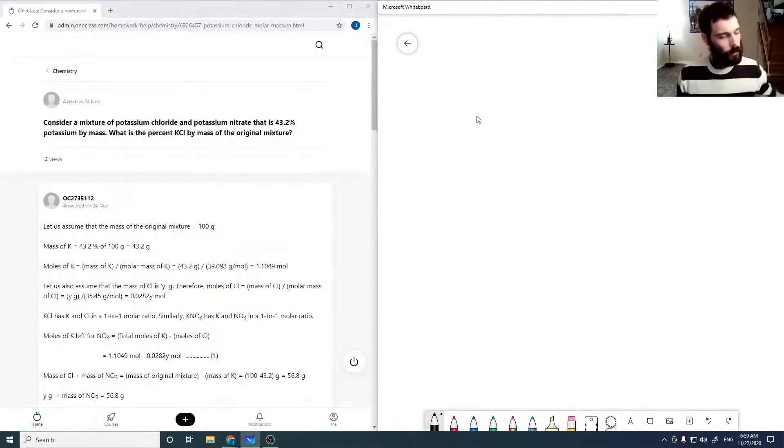Okay, so now we're going to consider a mixture of potassium chloride and potassium nitrate. It's 43.2% potassium by mass, so what is our percent KCl by mass? To start off, I'm just going to list our molar masses here.